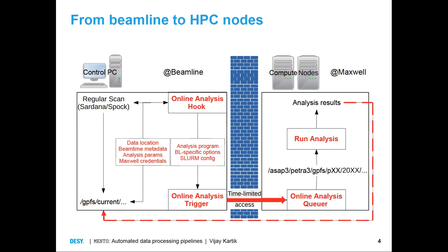These are two completely separate worlds — there's a very clear separation between what happens at the beamline and what happens on the compute cluster. Beamlines run on functional accounts which don't have access to the HPC cluster. The HPC nodes cannot see what's being written at the beamline during a beam time. So Mento comes in and tries to straddle these two worlds.